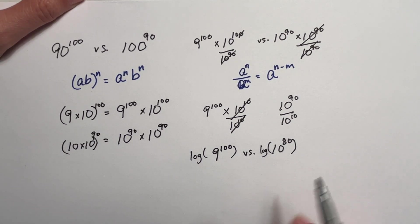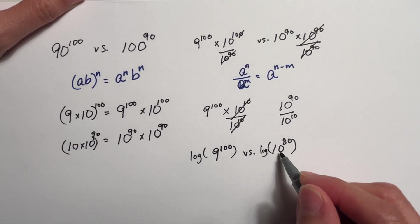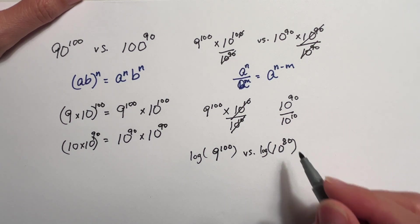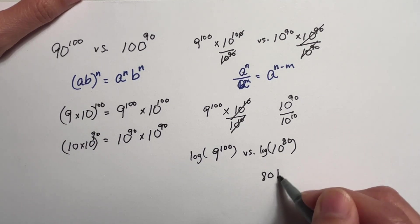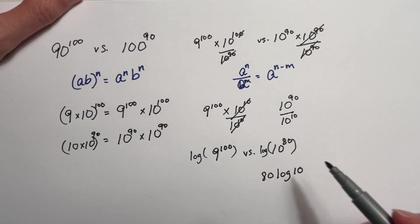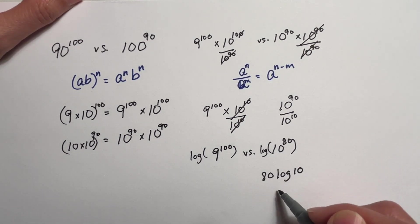And this is going to equal log base 10 raised to the 80, which is equal to 80 times the log of 10. And the log of 10 is equal to 1. So this is 80.